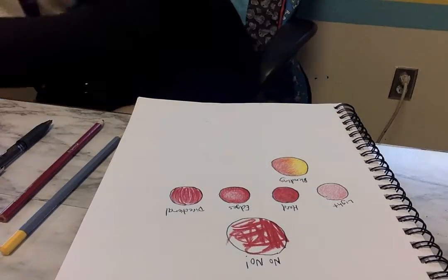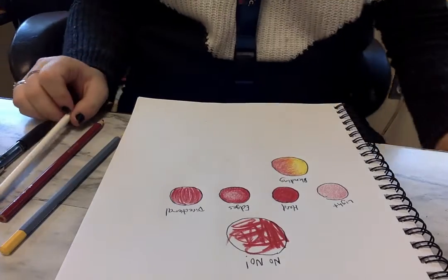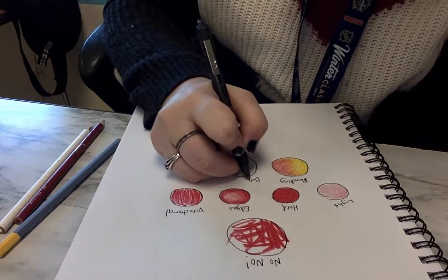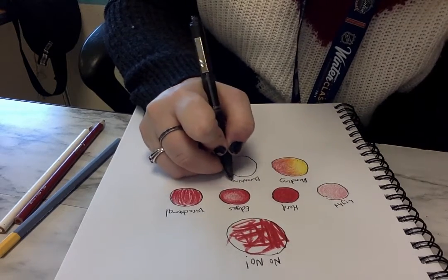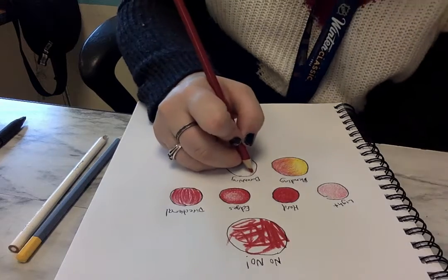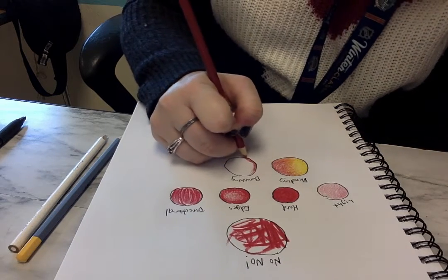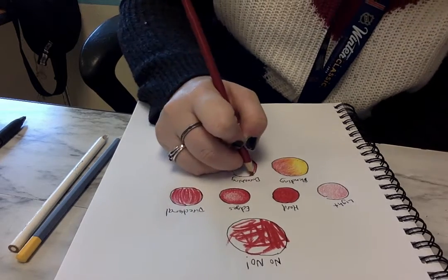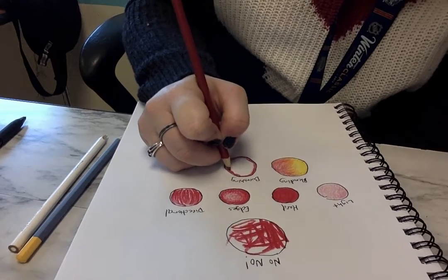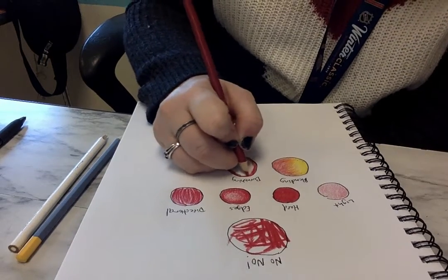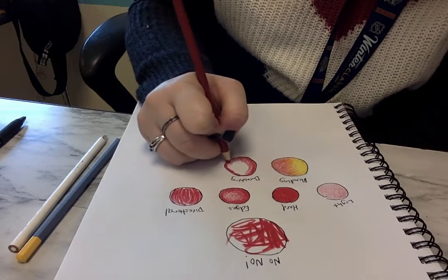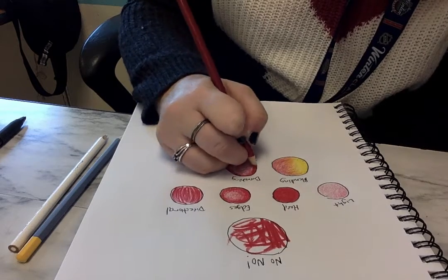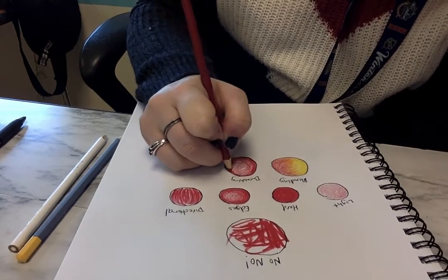There are two more types. This one is called burnishing. With this one I'm going to do the edges technique, so I'm going to go pretty dark around the circle, around the outside using lots of pressure. Then I'm going to go light towards the center, less pressure here, just like the first edges one we did.